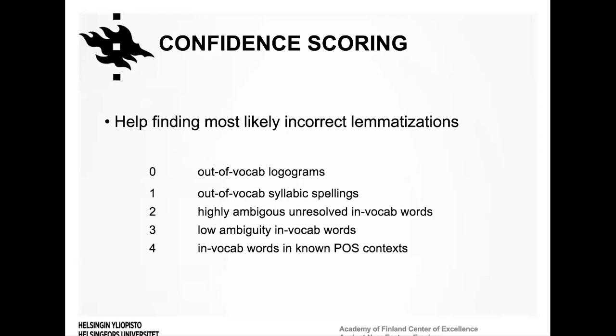The third-lowest confidence score is given to highly ambiguous words the lemmatizer cannot disambiguate based on POS context, for example because the context did not appear in the training data. The second-highest score is assigned to low-ambiguity in-vocabulary words, and the highest score is reserved for in-vocabulary words that are also attested in a well-known POS context seen in the training data.